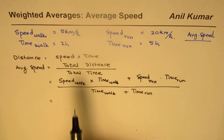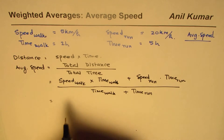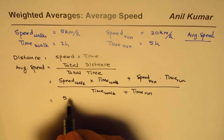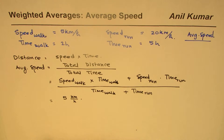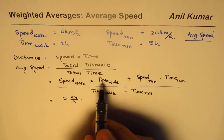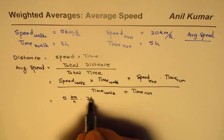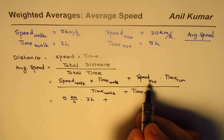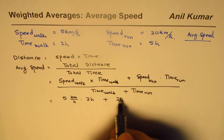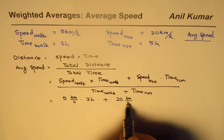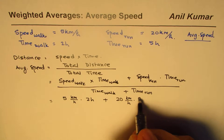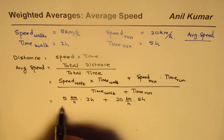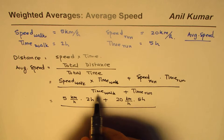Now plugging in our values: the speed to walk is 5 kilometers per hour, times 2 hours, plus the speed to run is 20 kilometers per hour, times the time to run of 5 hours, divided by total time which is 2 hours plus 5 hours.